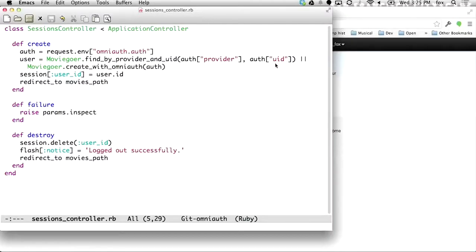So basically I did this by adding a provider and UID column to the users table, to the moviegoers table, I should say. and when I get the post back from Twitter, my create method gets called. if you look at the OmniAuth documentation, it will show you that you can get this hash, which is basically all the parameters that got sent back by the auth provider. So Twitter's API says here's the fields that come back on successful authentication. All of those fields become available in this OmniAuth.auth hash.